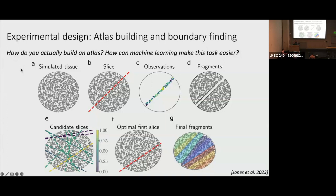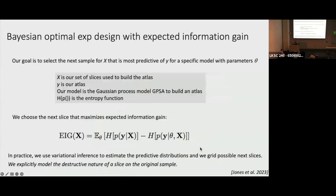To give you an idea of how you build an atlas, here's an example of simulated tissue. You take a slice — here are the observations from this slice, imagining it in 1D/2D but this is really 2D/3D. When you take a slice of an actual sample it creates two fragments; you're not allowed to have a subsequent slice go through those two fragments — it has to be on one side or the other. We can build a set of candidate slices, go over them, and figure out how much information about the full tumor each adds.